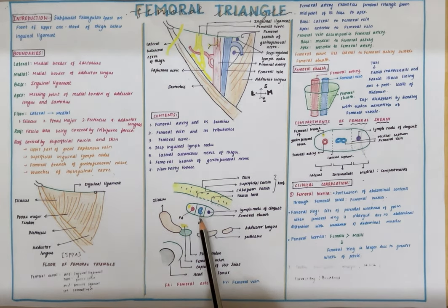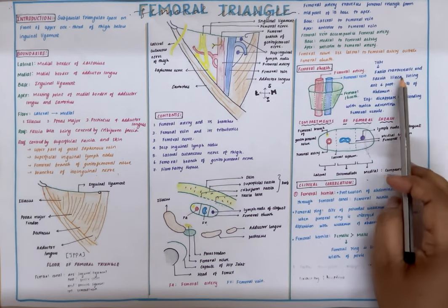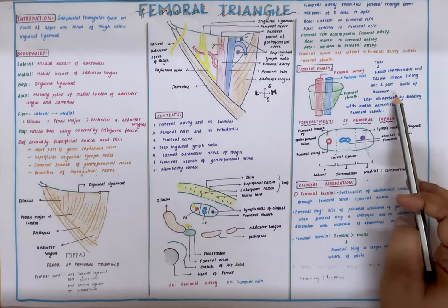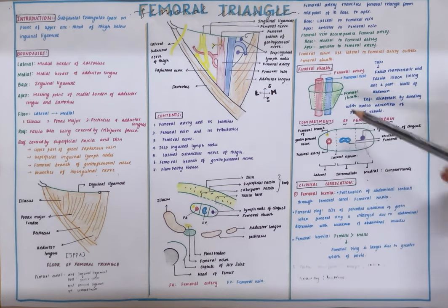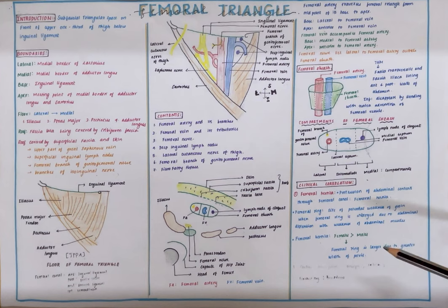Now what is a femoral sheath? It is a funnel-shaped tubular structure derived from fascia transversalis and fascia iliaca, which are basically the linings of the anterior and the posterior abdominal wall. It covers the initial 3 to 4 cm of the femoral vessels. As it comes down, it disappears by blending into the tunica adventitia of the femoral vessels.